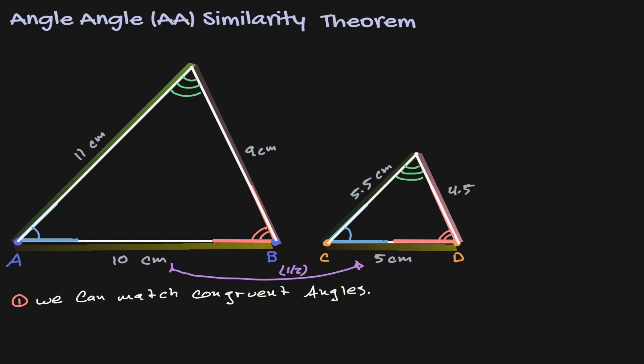Notice that all sides are in proportion. If we get the length on the left hand side of the left triangle and multiply by one half, we get the length on the left hand side of the right triangle. Similarly for the right hand sides — all sides follow the same scale factor, so we can say that all sides are in proportion.